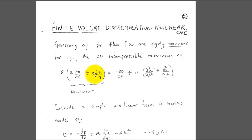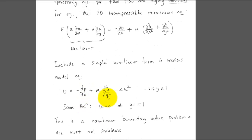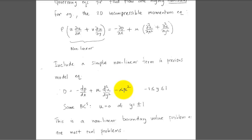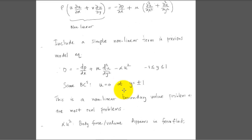Similarly, that second term is also a product of two unknowns and is nonlinear. To handle nonlinear terms, we take a previous model equation and add a simple nonlinear term — much simpler than the full momentum equation — with the same boundary condition. The intention is to keep the details simple but bring out the major ideas. So the only difference from the linear case is that added nonlinear term.